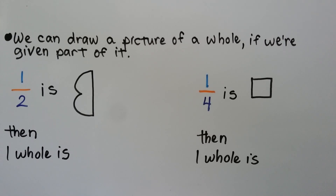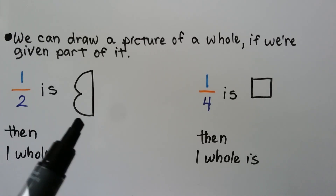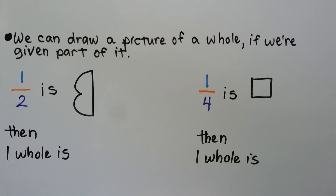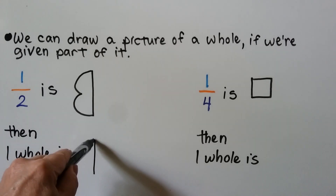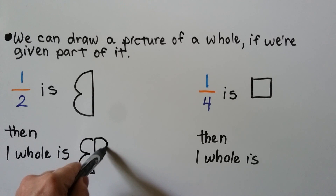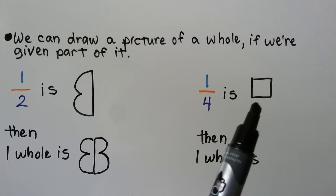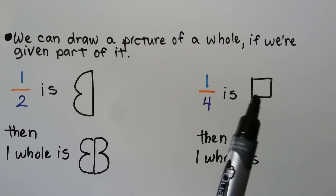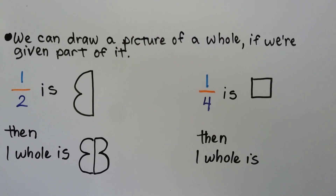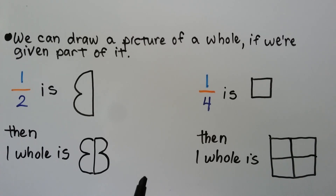We can draw a picture of a whole if we're given part of it. It says half is this shape. If that's half, then the whole thing is two of these — we can put the other half on and make it look like a butterfly. That would be half; that would be the whole. Here it says one-fourth is this square. If one-fourth is this square, that means we need four of those to make a whole one. We could make a drawing like this, or put four squares all in a row horizontally.